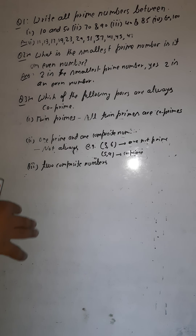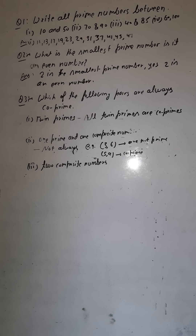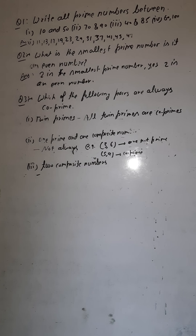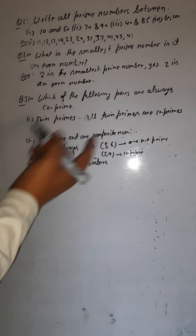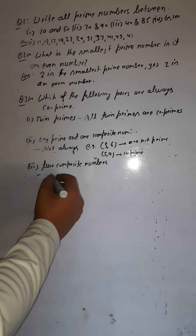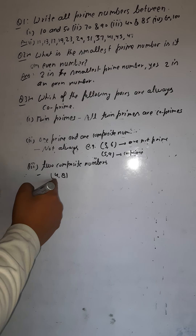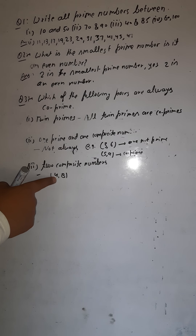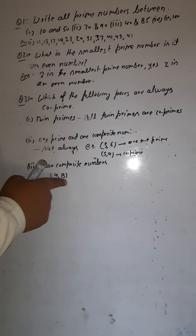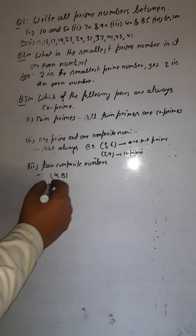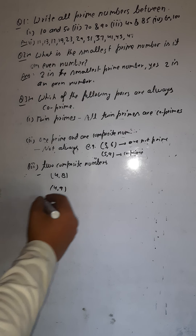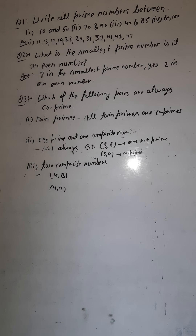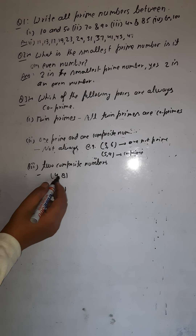Next: two composite numbers — can they be co-prime? Let's take four and eight: both composite. Factors of four are 1, 2, 4 and factors of eight are 1, 2, 4, 8. Common factors are 1, 2, and 4 — more than one common factor. So four and eight are not co-prime. Let's try another set: four and nine — both composite.